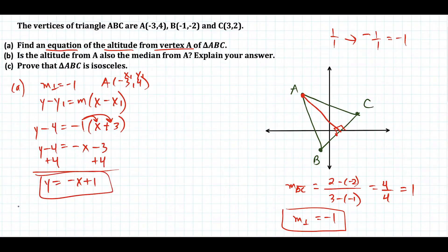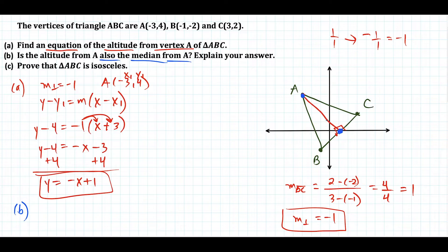For part B, we want to answer whether the altitude from A is also the median from point A. The median of a triangle is a line segment from one vertex to the midpoint of the opposite side. So the question we need to answer is: is the midpoint of side BC a point on the line y equals negative x plus 1? The first step is to find the midpoint of BC.